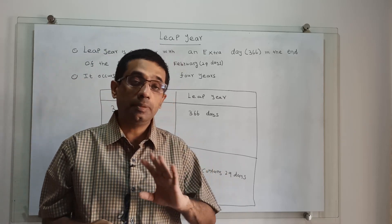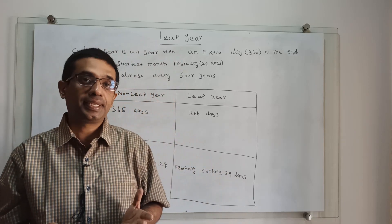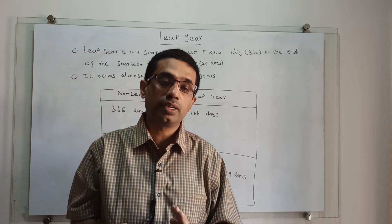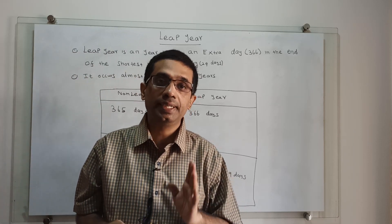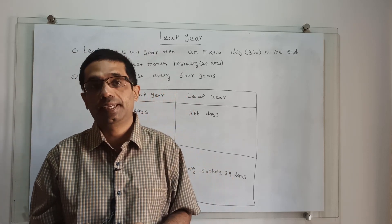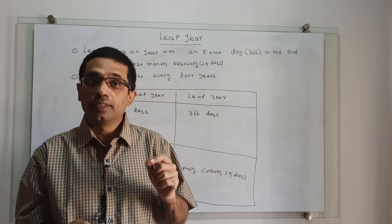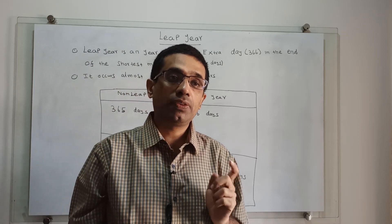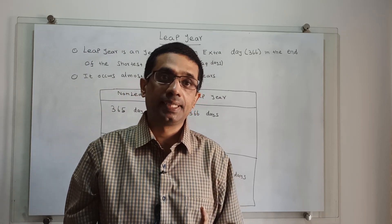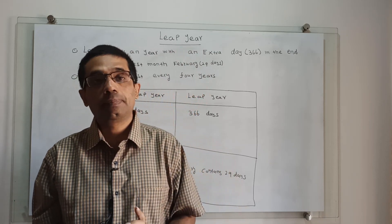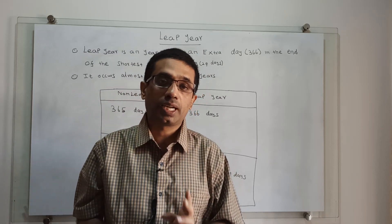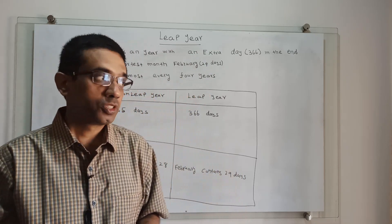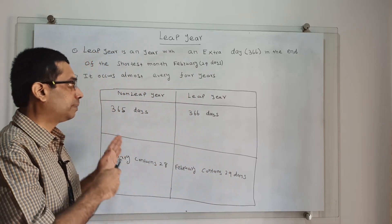To clearly understand: a leap year contains 366 days, opposed to non-leap years which contain 365 days only. The February month of a leap year contains 29 days, whereas for a non-leap year the February month contains only 28 days. This is the key difference.